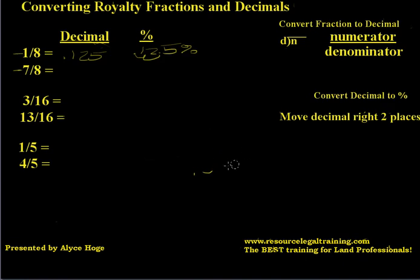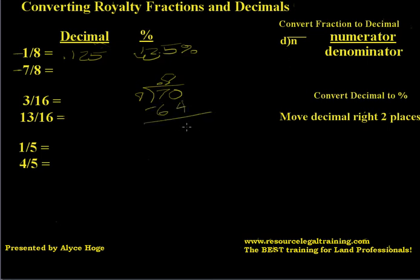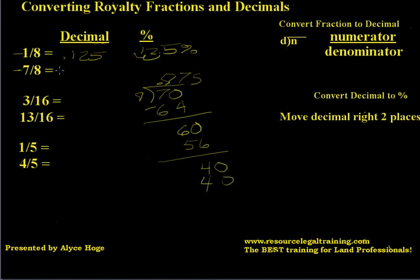The lessee is going to get a 7/8. So let's again divide the numerator by the denominator. 8 goes into 7 — well, 8 can't go into 7 — so we're going to add a decimal place and then plug in a 0. How many times does 8 go into 70? We know that 8 times 8 is 64. So 70 minus 64 leaves 6. How many times does 8 go into 6? It can't, so we're going to add a 0. 8 goes into 60 seven times. 7 times 8 is 56. 60 minus 56 is 4. 8 goes into 4 — it can't — so we're going to add another 0. And that is 5 times 8 is 40. So the lessee's interest — the oil and gas company's interest — is a 0.875 decimal.